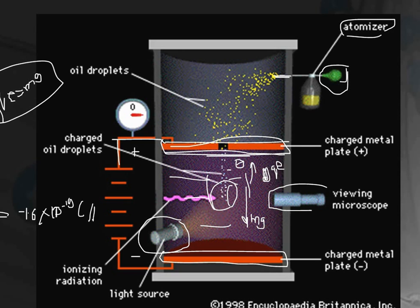So this was the Millikan experiment. This charge has been calculated by modern methods and is also known more precisely as minus 1.6022 into 10 to the power minus 19 coulombs.